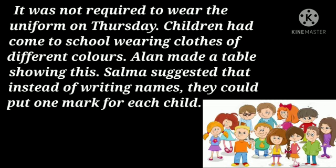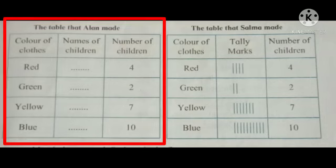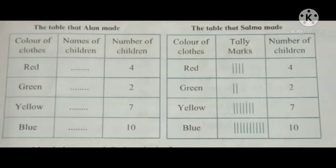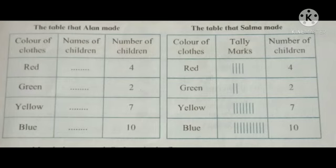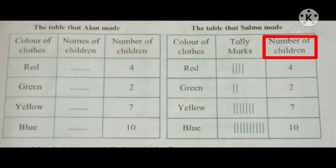On a Thursday when uniform was not required, children came to school wearing clothes of different colors. Alan made a table showing this. Salma suggested that instead of writing names they could put one mark for each child. You can see two tables on screen: Alan's table has columns for color of clothes, names of children, and number of children. Salma's table has color of clothes, tally marks, and number of children.